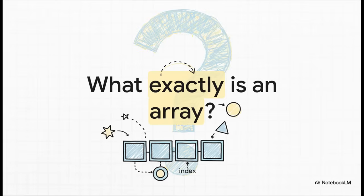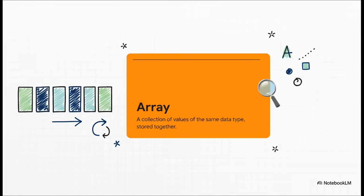You've probably heard this word 'array' thrown around a lot, right? But what does it actually mean? What is this thing that's so fundamental to coding? At its heart, an array is really just a list, a collection of things. It could be a list of numbers, a bunch of names, a series of temperatures from a sensor. The key, though, is that all the values have to be the same type of thing.